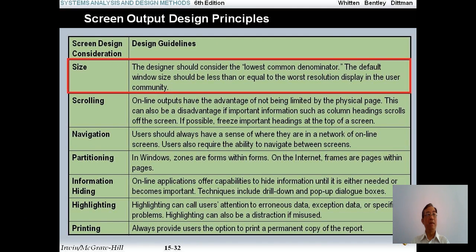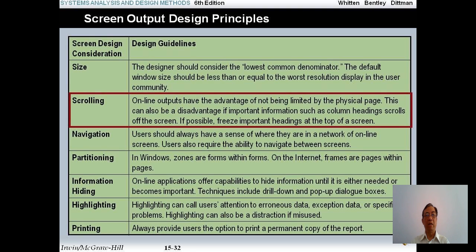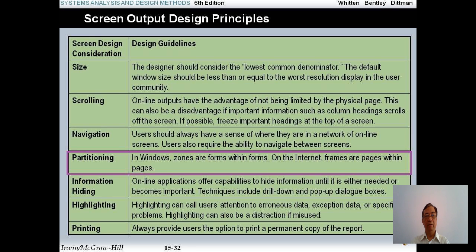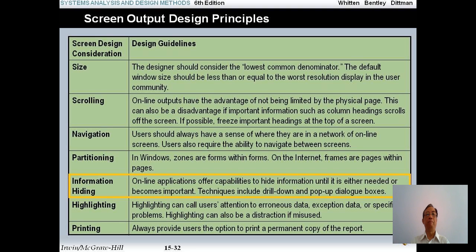For screen output design, remember that now we can access the internet from smartphones or iPads, so you must design screen output sufficient for these devices. Online output has the advantage of not being limited by a physical page. For navigation, users should have a sense of where they are in a network of online screens and should have the ability to navigate between screens. Consider partitioning of information, and highlighting — very important if you want to emphasize important information, errors, exceptions, or specific problems. Always provide the option to print a permanent copy of the report.